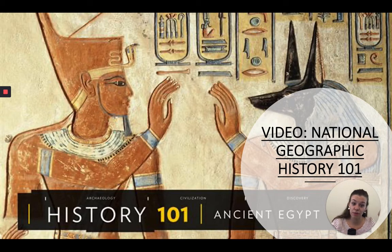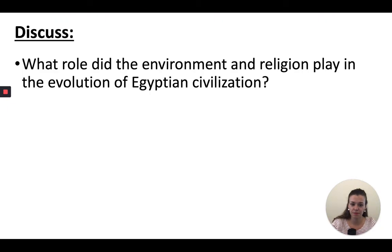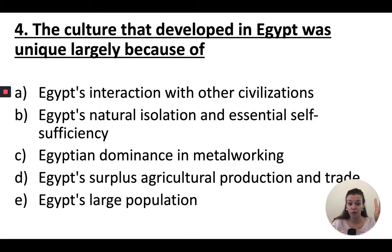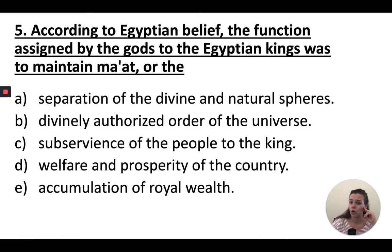There's a great video from National Geographic about ancient Egypt. Consider this question: what role did the environment and religion play in the evolution of Egyptian civilization? Pause and see if you can answer this. We're going to do a couple of practice questions before we move on to the Indus River Valley. Number four — remember we ended with number three on Mesopotamia. The culture that developed in Egypt was unique largely because of which of the following? And number five: according to Egyptian belief, the function assigned by gods to Egyptian kings was to maintain ma'at — so what was ma'at? What was the job of the pharaohs?